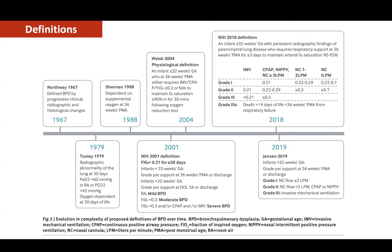In 2001, a clear-cut definition came and most researchers started using it. The first criteria was the baby should be requiring oxygen for the first 28 days after birth, and then divided into mild, moderate, and severe at 36 weeks of PMA. Babies on room air are mild BPD; those on oxygen less than 30% are moderate BPD; those on oxygen more than 30% and/or on CPAP or invasive ventilation are severe BPD. Babies less than 32 weeks were evaluated at 36 weeks PMA; those more than 32 weeks at day of life 56 or at discharge.